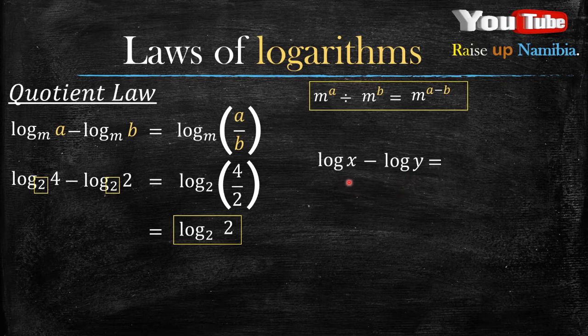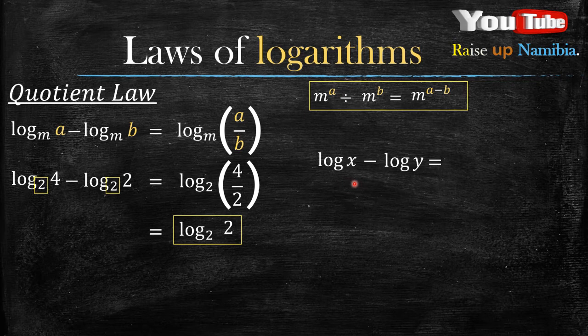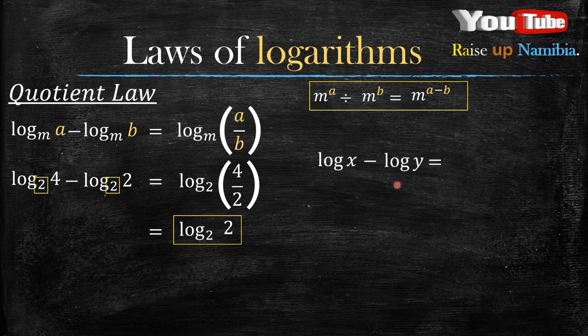Again, the same concept applies. And one thing I should point out is once you see that there's no base written, this simply means that the base is 10. Each time you see that there's no base written, because this type of logarithms are called common logarithms.